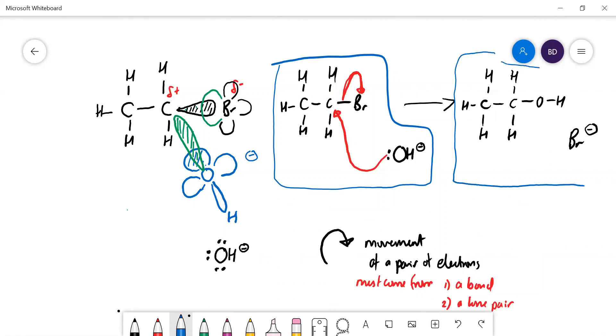On this side it goes to a neutral ethanol molecule, so the bromine coming off must have a negative charge so that you've got the same charges on both sides of the equation.